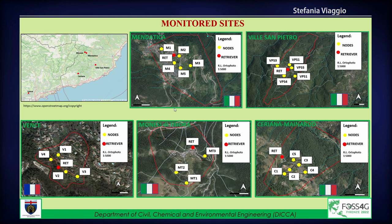Currently we have five monitored sites. Four are located in Italy in the province of Imperia: Mendatica, Ville San Pietro, Monesi di Triora, and Ceriana Meinardo. The fifth site, Vans, is located in the French Riviera. These networks were installed within the framework of an Alcotra Interreg Italy-France Cooperation Programme called the Aded Vitam Project.